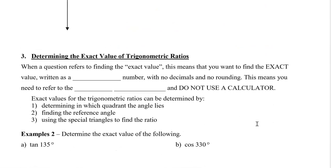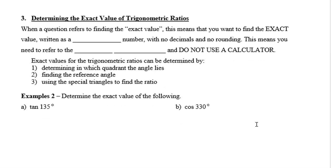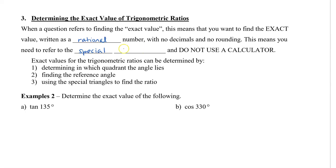Let's take a look at how to determine the exact value of trigonometric ratios. Whenever you see the words 'exact value,' this means you want to find the value written as a rational number with no decimal and no rounding. You will need to refer to the special triangles and you do not use a calculator. The steps are: determine in which quadrant the angle lies, find the reference angle, and then use the special triangles to find the ratio.